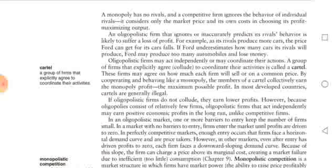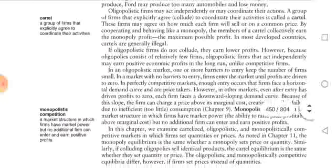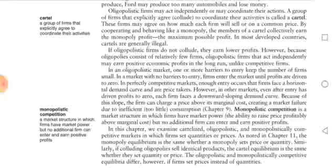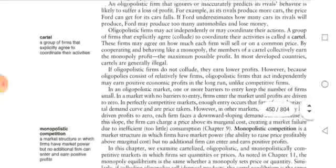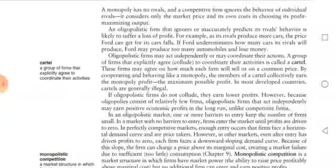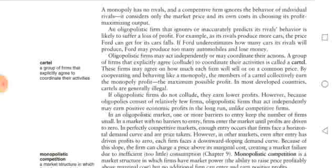We have a definition of monopolistic competition: a market structure in which firms have market power but no additional firm can enter and earn positive profits. In monopolistic competition, firms are not unlimited but 30, 40, 50, or 60 — so there are many firms. As you know, there are cold drinks which are of very many types, so that market comes into monopolistic competition.